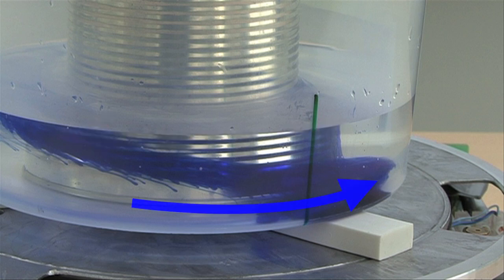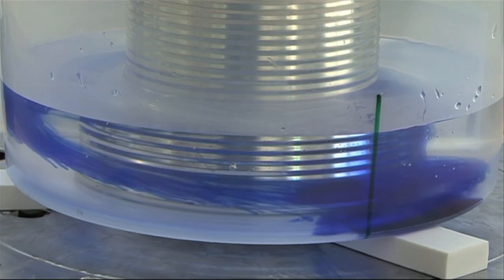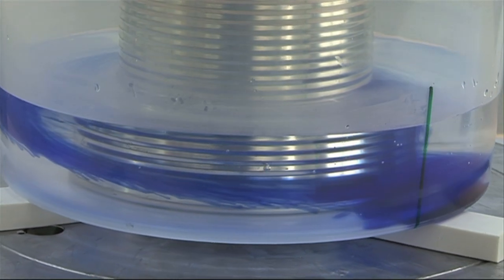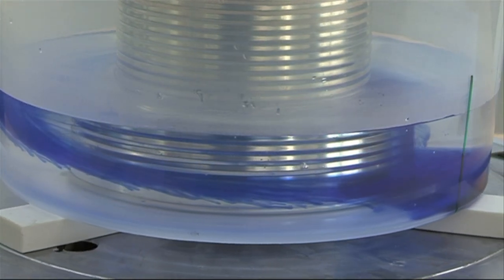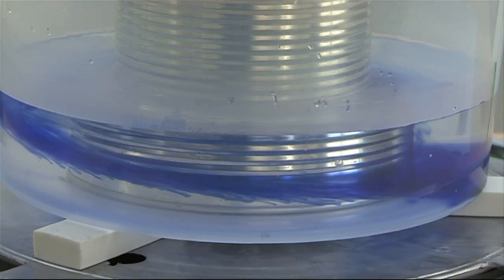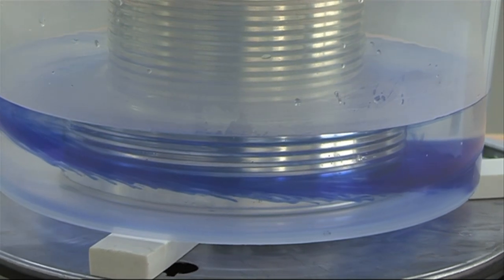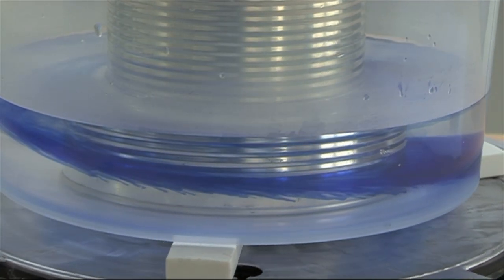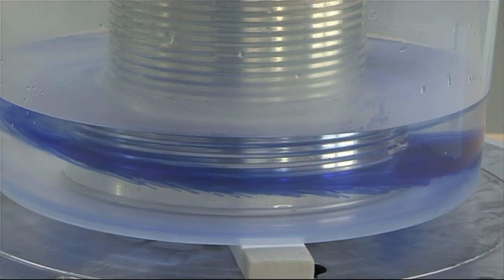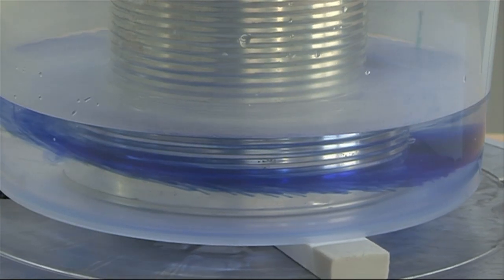The cooler water meanwhile began to move inwards undercutting the warm water but it was turned to its right by the Coriolis effect. So now it's flowing this way relative to the tank.